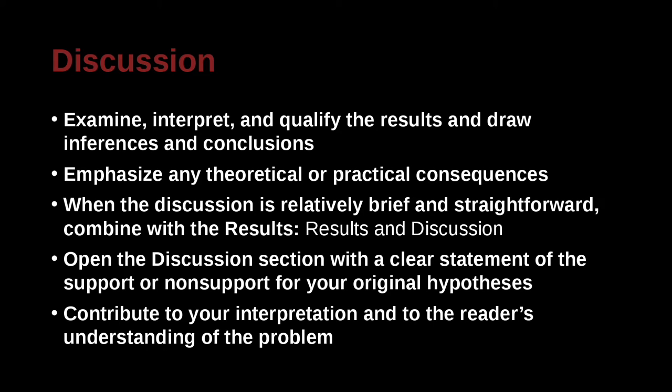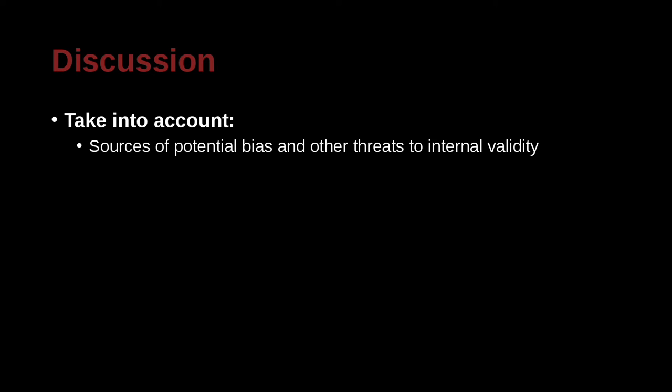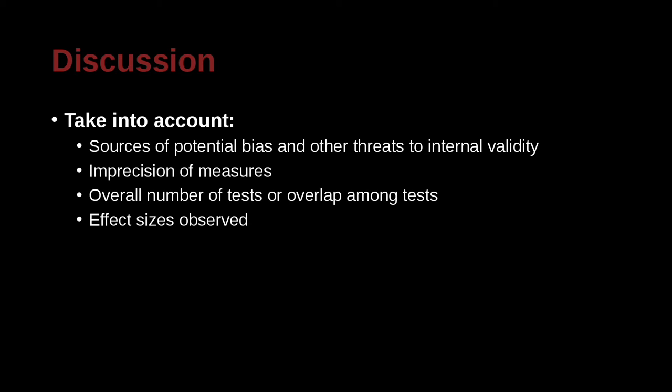So that's a good way to begin your discussion, making the reader remember exactly what the hypothesis was. Contribute to your interpretation. The reader's understanding of the problem is your goal. You want to help them interpret what does this all mean. When you write your discussion, you should remember sources of potential bias. That is, you can point out that your research may not be perfect. It may have some limitations. You can point those out. You also want to remember the measurements. What's the standard deviation? What's the error bars on there? So you can bring this up also. You also want to remember the number of tests or overlap among tests. So if you had more than one test condition or two test conditions, you need to explain clearly here. What do they mean together or apart? How do I interpret this?